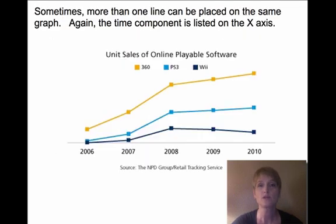But sometimes more than one line can be placed on the same graph, so you have to do a little more digging to figure out exactly what's going on here. This graph has three lines on it and shows the sales of 360 games versus PS3 games versus the Wii games.